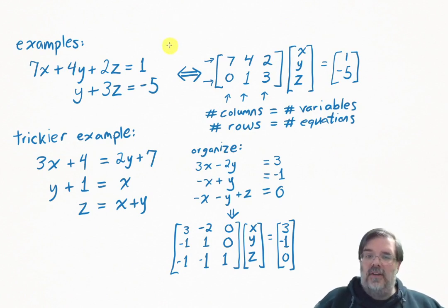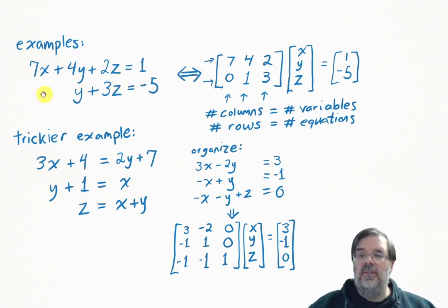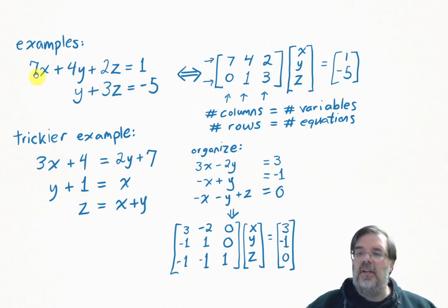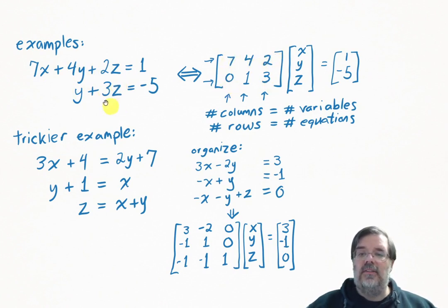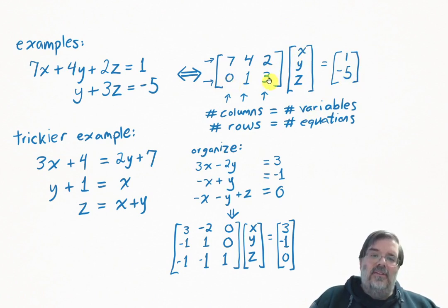Not all matrices are perfect squares — it depends on how many equations you have and how many variables. Here's a trickier equation with two equations and three unknowns. There's no x in one equation, so it's as if there are zero x's. Reading off the coefficients: we have 7, 4, 2 and 0, 1, 3. Gather those into a grid. The variables x, y, and z go into a vector, and the constants 1 and negative 5 go into another vector. From this example you'll notice that not all vectors have to be the same size — we have three variables but only two equations, which is why we only have two constants in the vector on this side.